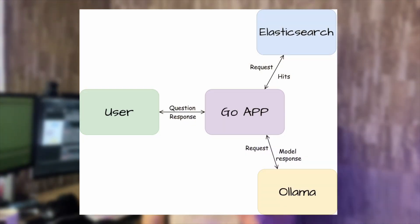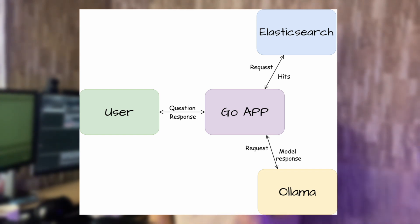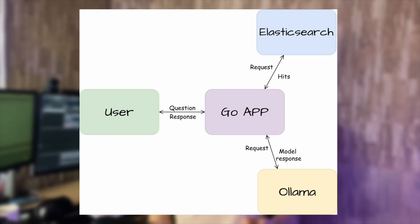We need an overview of how the app works by following the on-screen diagram. OLAMA provides access to models in a straightforward way, making it easy to download and switch between them. Go will serve as a proxy between OLAMA, Elasticsearch, and the client.